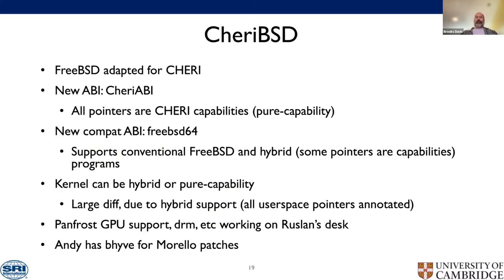CheriBSD is FreeBSD adapted to CHERI, ported to RISC-V and Morello. The application stack includes a slice of X11 and KDE, WebKit, Python, OpenSSH, nginx, and PostgreSQL. From a user perspective the big change is a new CHERI ABI where all pointers are CHERI capabilities, including pointers used for system calls — the kernel only accesses user-space memory through capabilities. There's also a FreeBSD64 compatibility ABI that supports conventional RISC-V 64 and AArch64 binaries as well as hybrid ones.